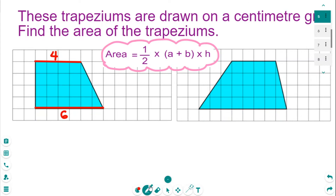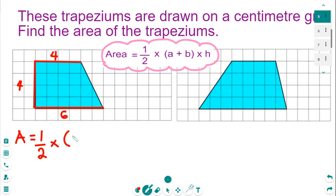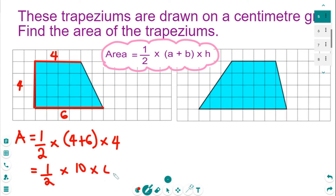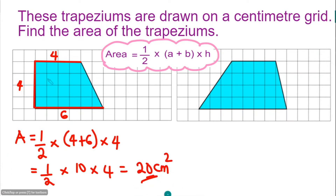The vertical height counts 1, 2, 3, 4 — that's 4. So the area is a half, multiply the sum of the parallel sides 4 and 6, then multiply by the vertical height 4. Working this out: a half times 10 times 4 gives 20 cm squared. So the area of this trapezium is 20 cm squared.